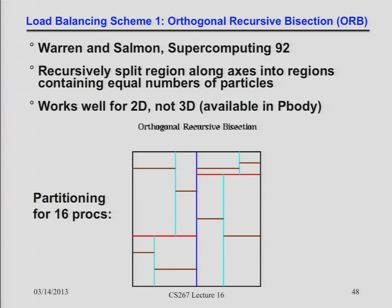There are two schemes for assigning regions of space. The first looks like quad trees but divides particles evenly by count, not space. I place a blue line so half the particles are on each side, then recursively subdivide each half with a red line until half are above and half below, repeating until I have 16 boxes each with about 1/16th of the particles. Experimentally this worked reasonably in two dimensions but didn't balance the load well enough in three dimensions.